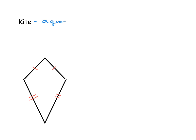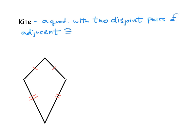More formally, a kite is a quadrilateral with two disjoint pairs of adjacent congruent sides. The word 'disjoint' means you can't have a side overlapping in each set. For example, if you had a pair of adjacent congruent sides meeting at one vertex and another pair at an adjacent vertex sharing a common side, those pairs would not be disjoint — so that would not be considered a kite. The key is that the congruent pairs must meet at opposite vertices, not adjacent ones.